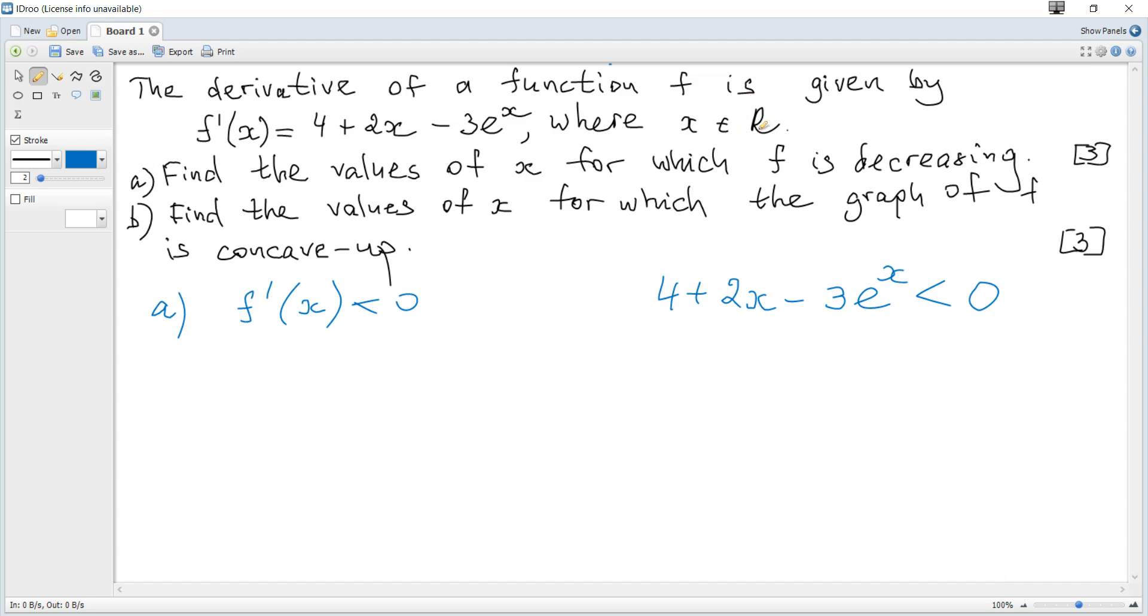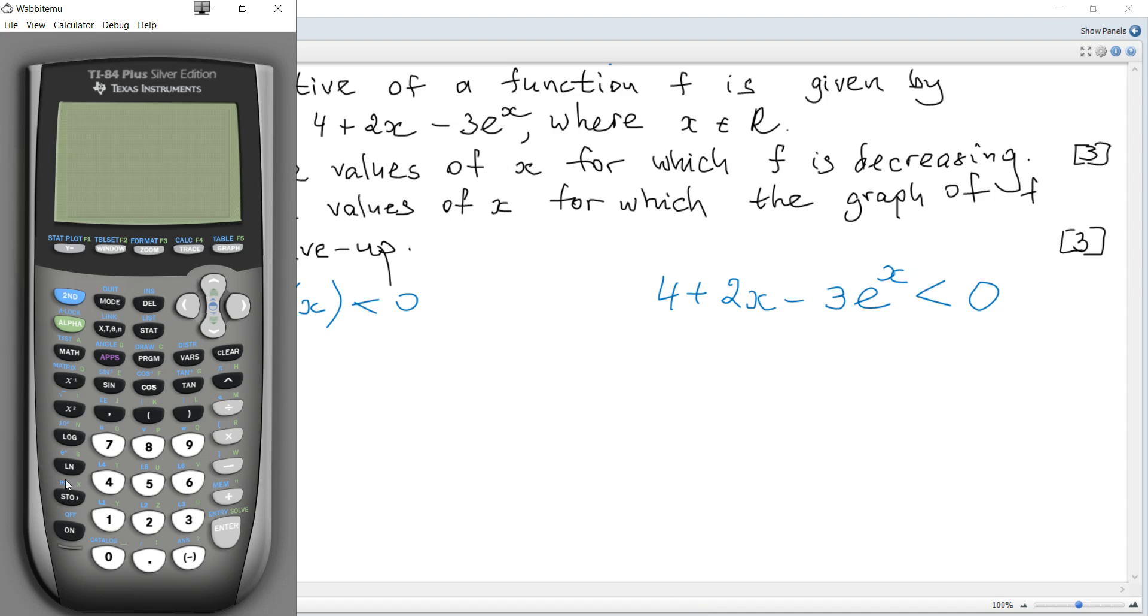Since x is a real number, we use a calculator to graph 4 + 2x - 3 times e to the power of x. We set the window from negative 5 to 5 for both axes, and we can see that the graph looks like this.